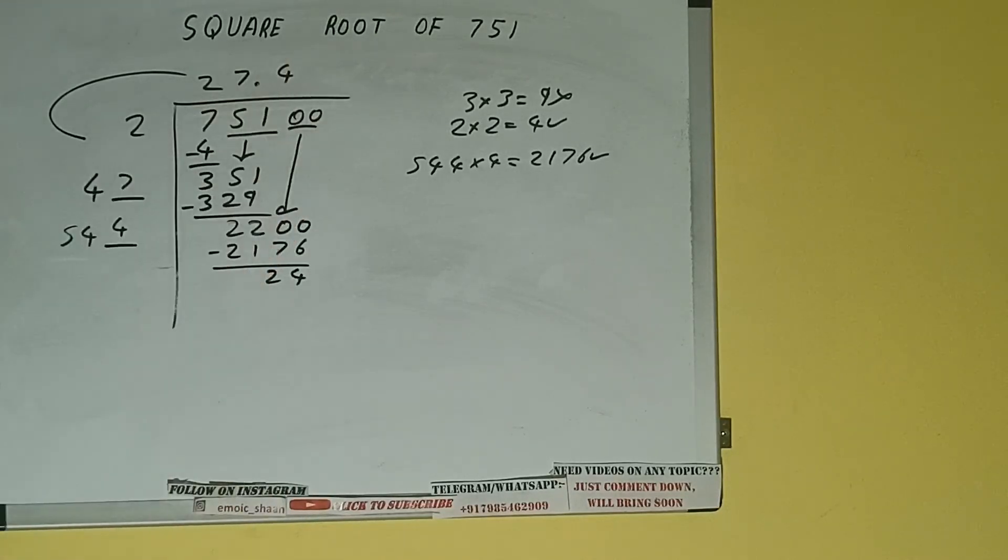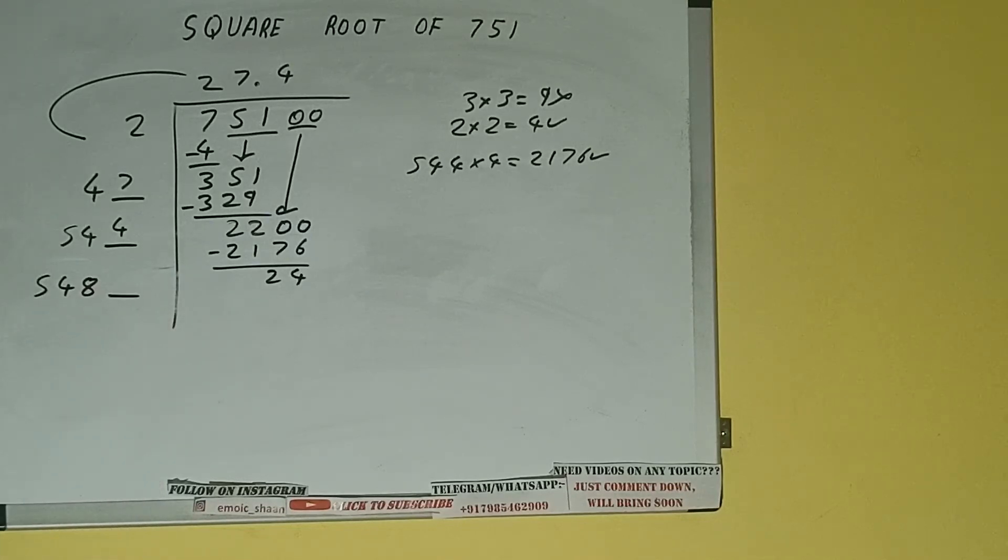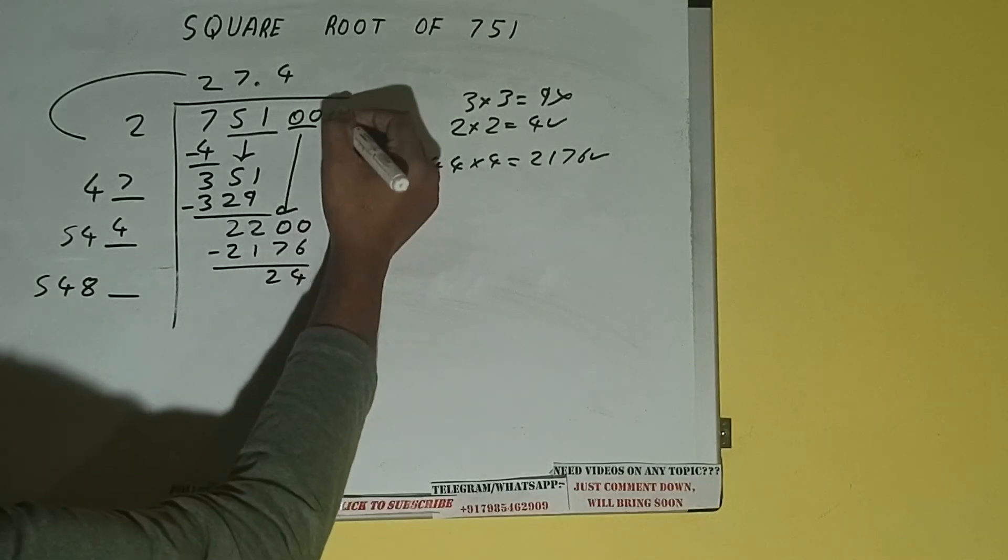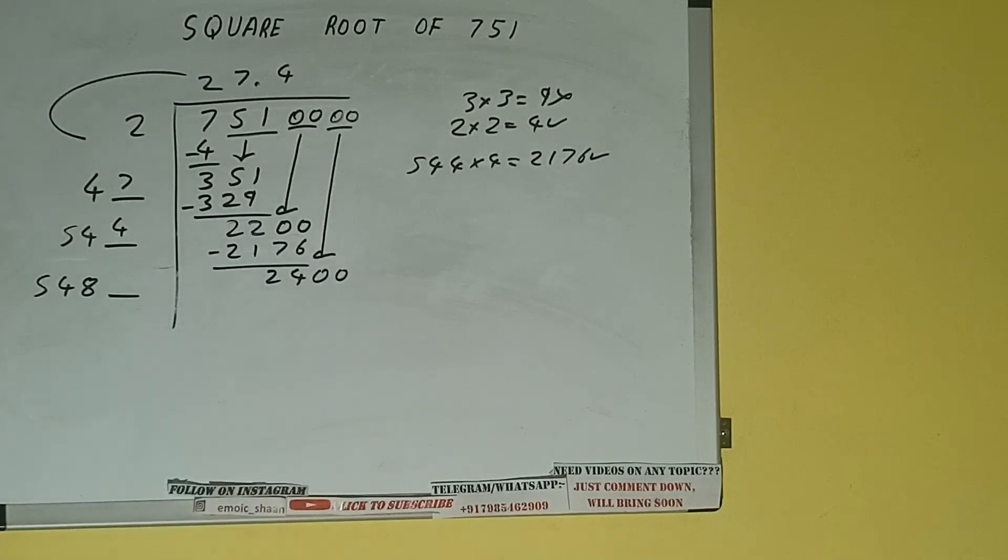Now 544 times 4 we did, so add both. 544 plus 4 is 548, and 1 digit extra. This number we need to make bigger. Bring the next pair of zeros down and it will be 2400.